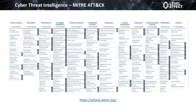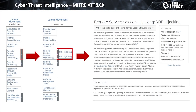Within each tactics column we have techniques — the very specific methods an adversary employs to satisfy that tactic. For example, for lateral movement an adversary has nine techniques available. One is Exploitation of Remote Services, and we can drill down into that to learn more about how adversaries conduct lateral movement using that technique.